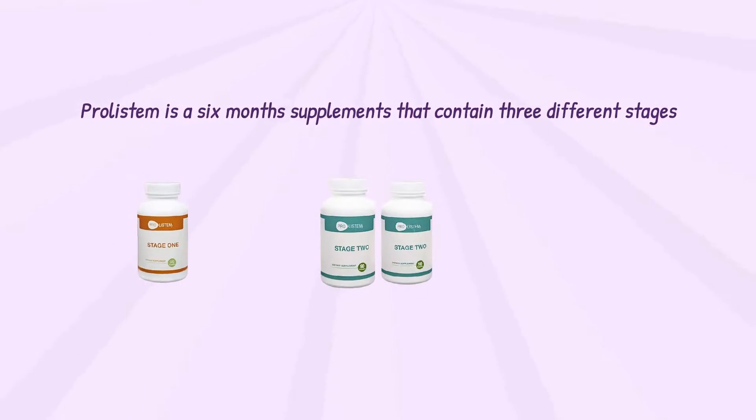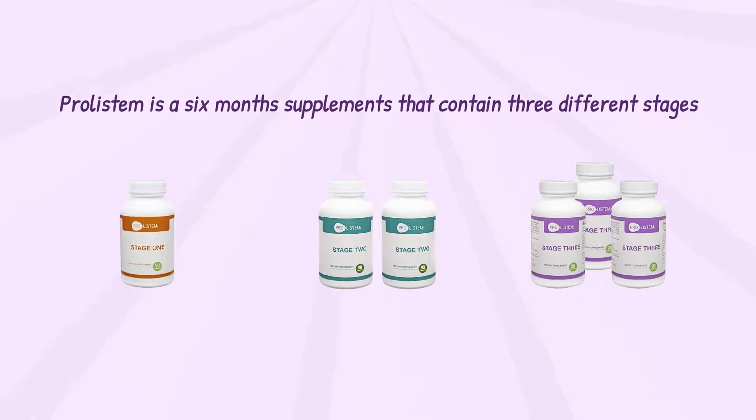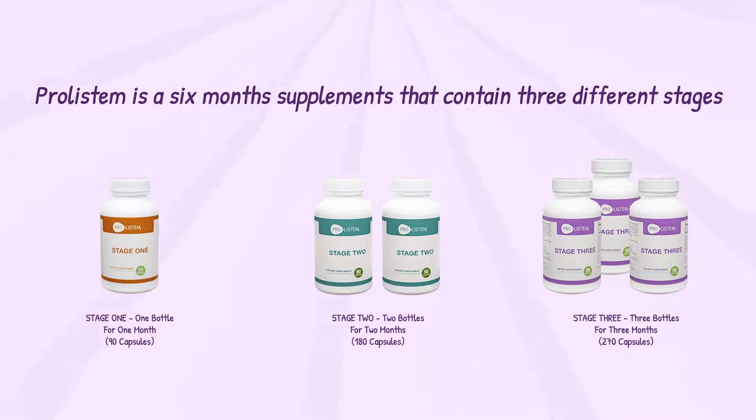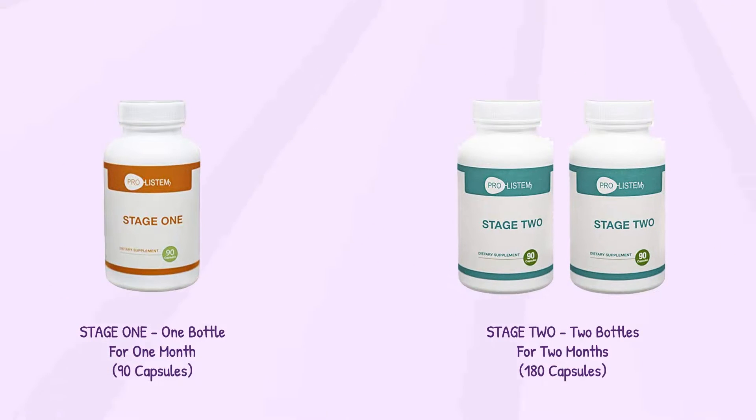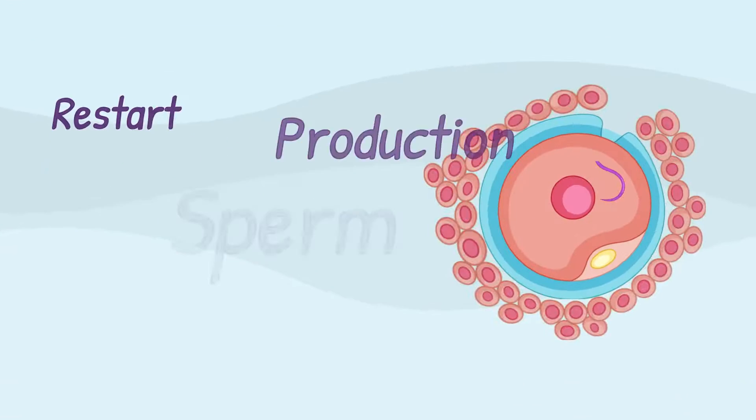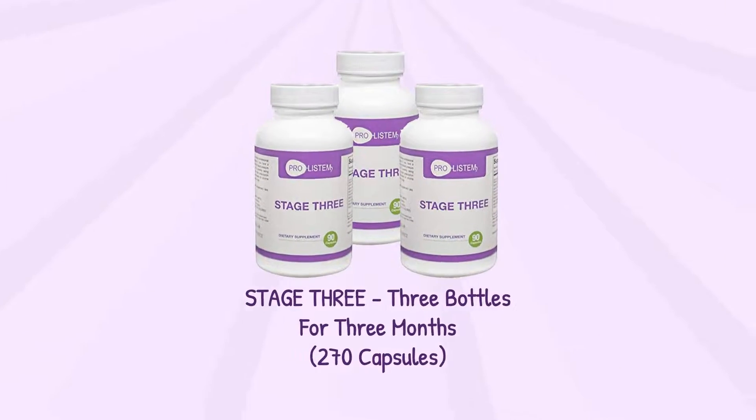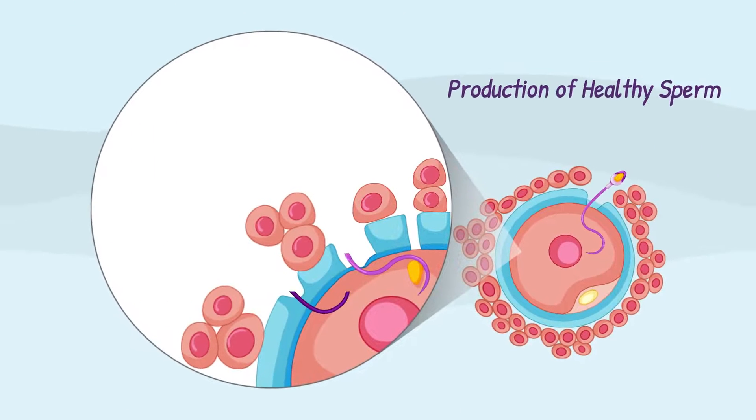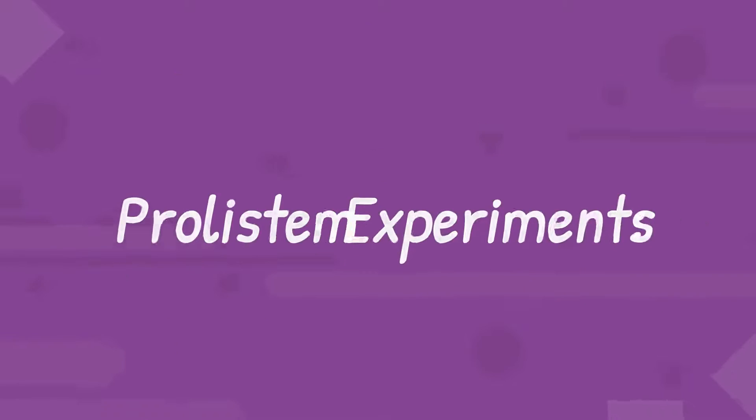Prolistem is a six-month supplement that contains three different stages: stage 1, stage 2, and stage 3. Prolistem stages 1 and 2 work on the reduction of testosterone, which pushes the body to restart sperm production, while Prolistem stage 3 supplies the body with natural components to increase the production of healthy sperm.